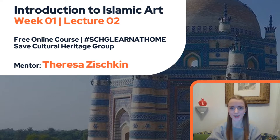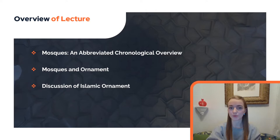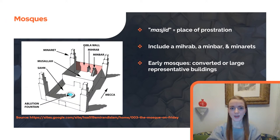Hello everyone and welcome back to week two of the free course Introduction to Islamic Art at Safe Cultural Heritage Group. Today we will be talking about mosques, their ornament and decor, with a brief discussion of Islamic ornament. Starting with mosques, also referred to as masjid, the so-called place of prostration to God — a mosque is the house of prayer in Islam and is said to be modeled after the courtyard of the Prophet's house in Medina.